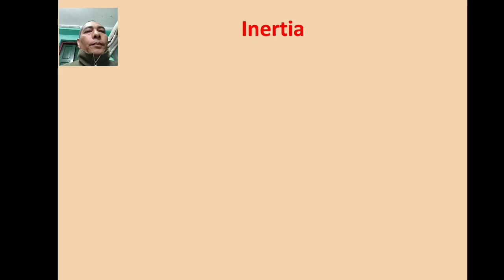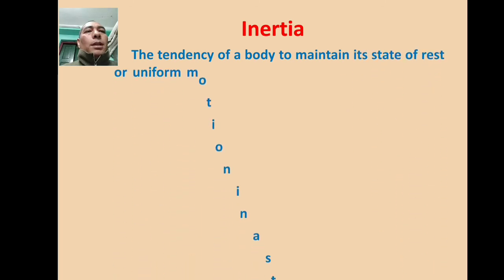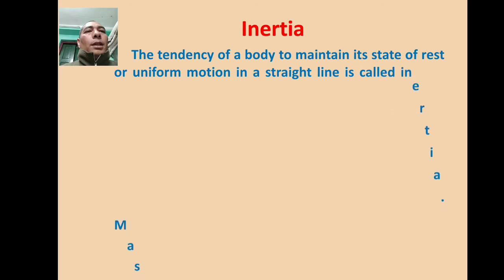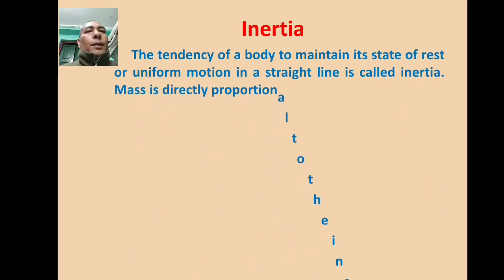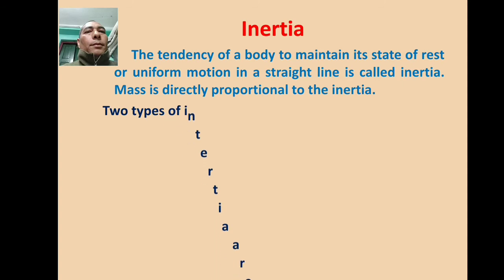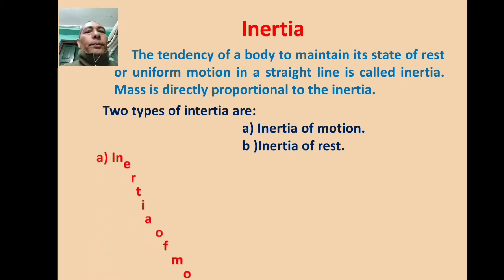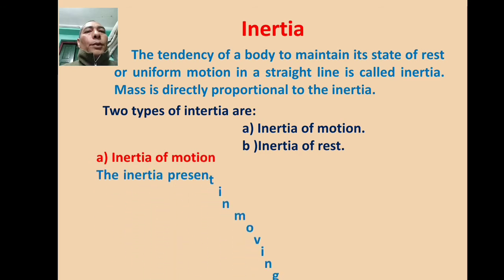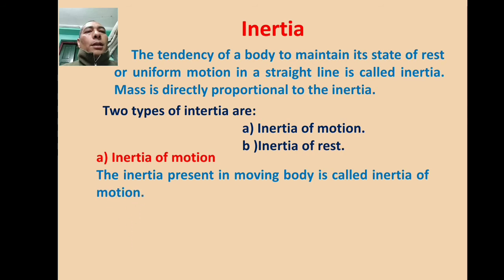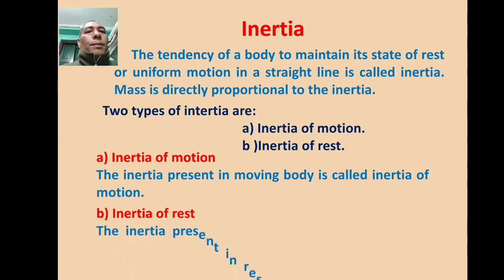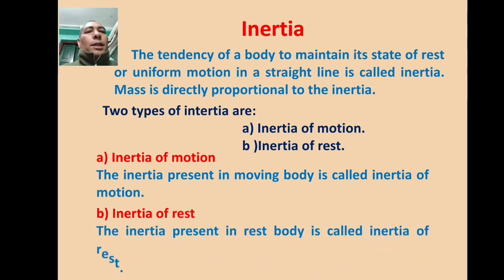Inertia: The tendency of a body to maintain its state of rest or uniform motion in a straight line is called inertia. Mass is directly proportional to inertia. Two types of inertia: A. Inertia of motion — the inertia present in a moving body is called inertia of motion. B. Inertia of rest — the inertia present in a body at rest is called inertia of rest.